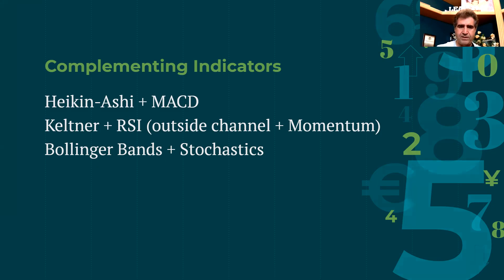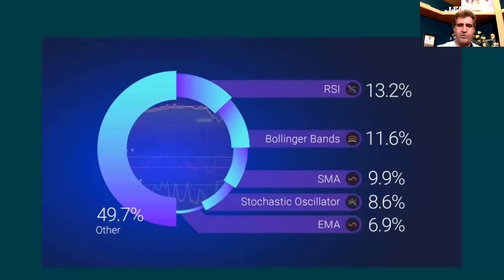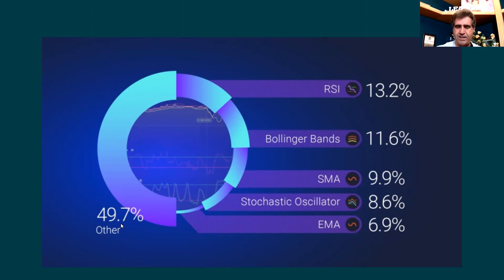A study based on mobile app usage found that the most popular indicator was RSI at 13.2%, followed by Bollinger Bands at 11.6%, simple moving average at 9.9%, stochastics at 8.6%, exponential moving average at 6.9%, and all other indicators combined at 49.7% — giving an indication of how traders in today's world are using these tools.